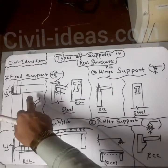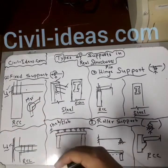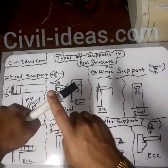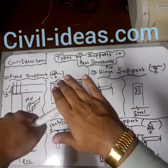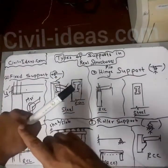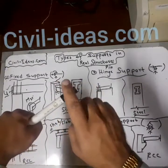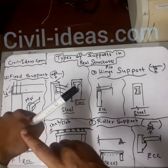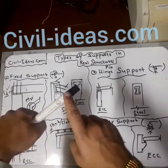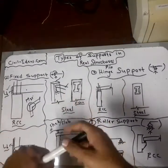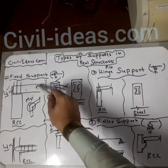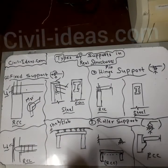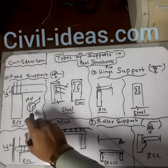This support is fixed because the reinforcement is properly provided. If you apply a load on the beam — this is the column and this is the beam — the load transfers from the beam to the column. It resists both the forces and the bending moment in the beam, transferring them to the column. This is the fixed support.